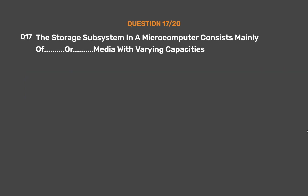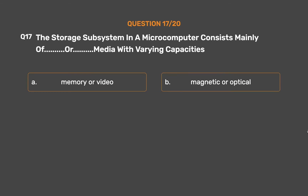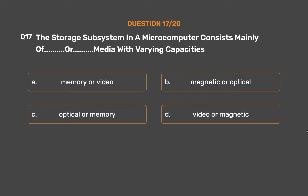Question number 17. The storage subsystem in a microcomputer consists mainly of media with varying capacities. Option A: Memory or video. Option B: Magnetic or optical. Option C: Optical or memory. Option D: Video or magnetic.